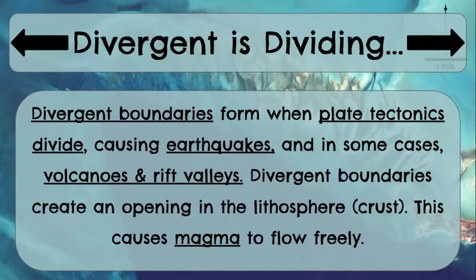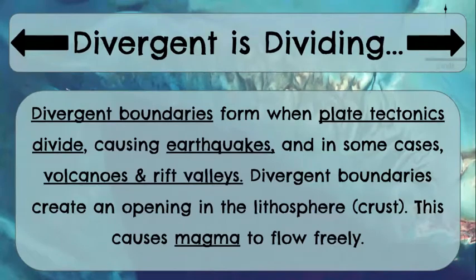Divergent boundaries create an opening in the lithosphere — and remember that the lithosphere is part of our crust. This causes the magma to flow freely. When the earth is opening, that magma is coming out through the new opened part of the crust, and it is cooling, causing more crust to form.